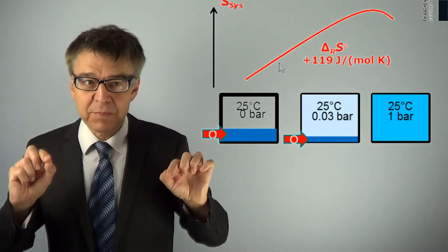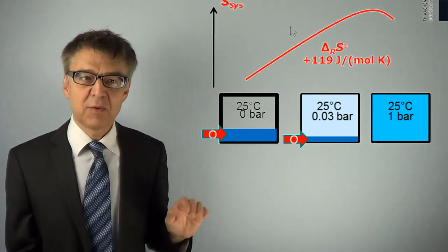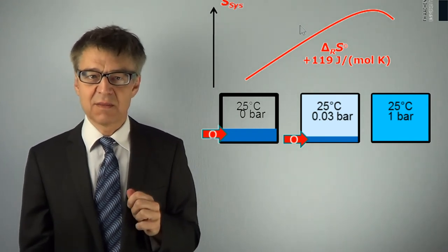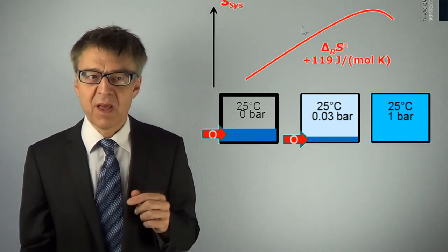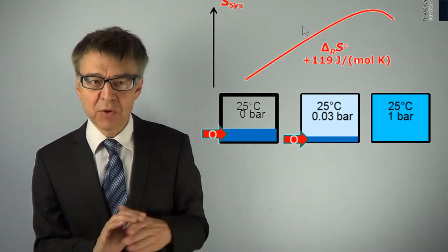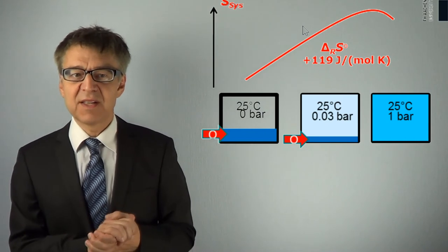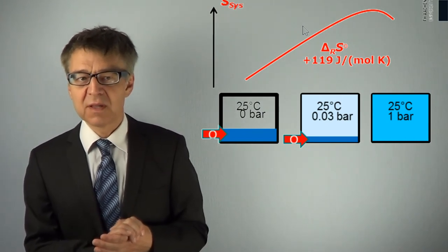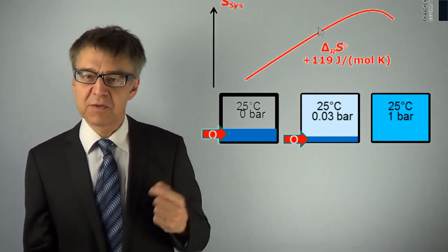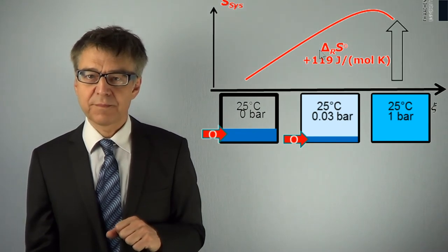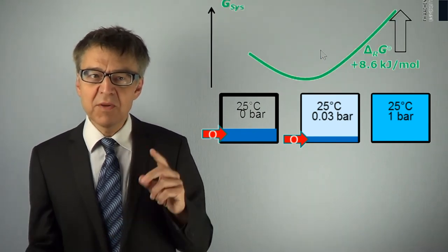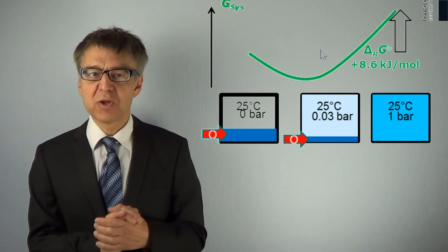Looking through the entropy glasses, we see an increase of chaos in the system during the process. The entropy difference between the pure initial state and the pure final state is 119 joules per mole Kelvin. An endotropic process.